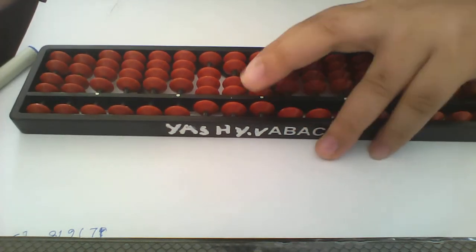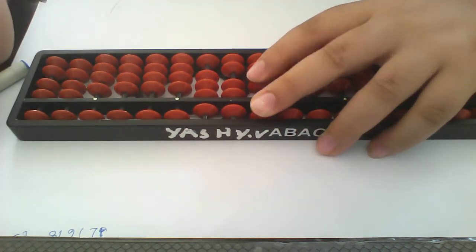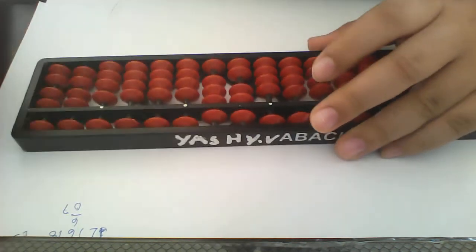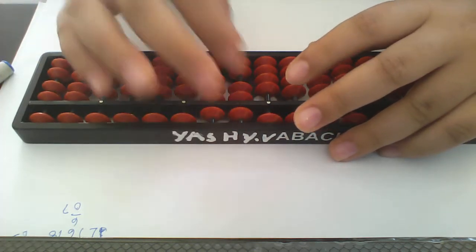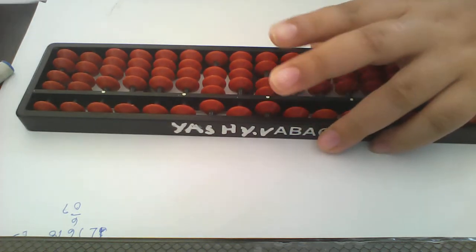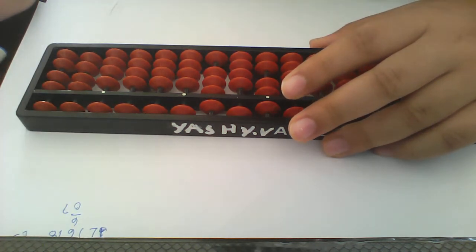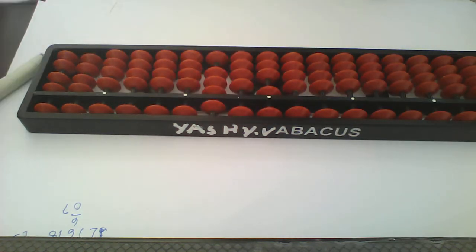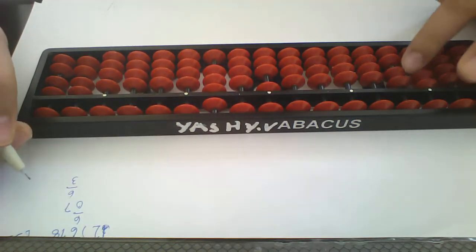And we are going to minus 6. Here 0 will come, and 7 will come down. So now for 7, what we will do — we will put again the same 3, and minus 6.